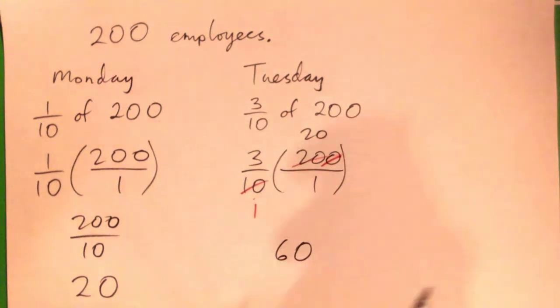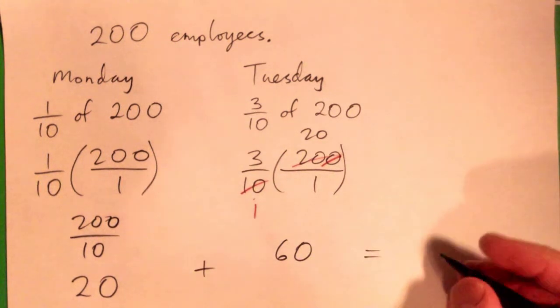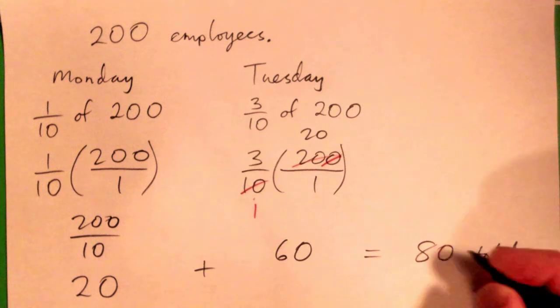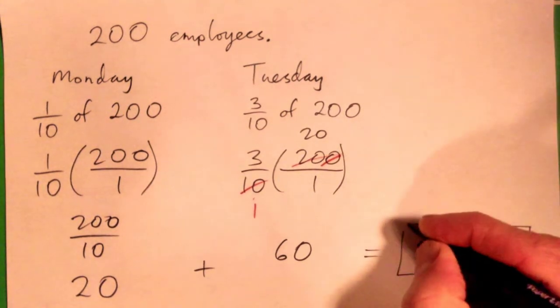Lovely. So 20 call in sick on Monday, 60 on Tuesday. 20 plus 60 gives the total, which is 80 total employees calling in sick over the two-day period. Very good. That's it.